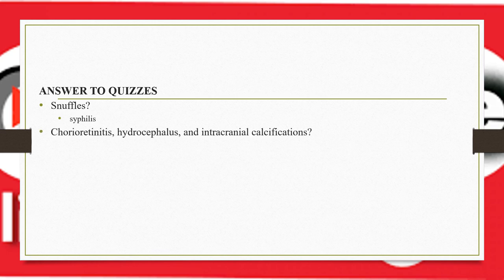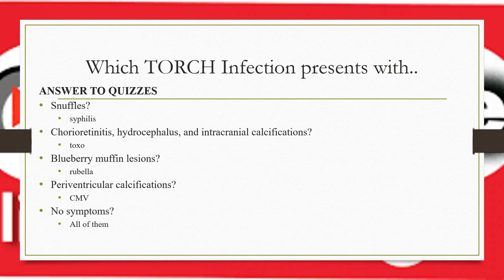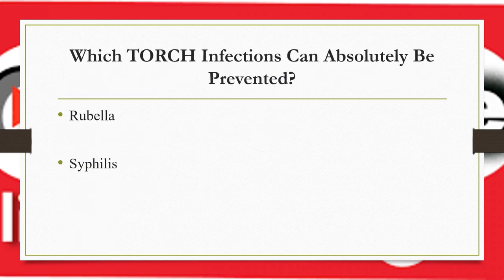To answer the initial quiz: snuffles is a sign of syphilis; chorioretinitis, hydrocephalus, and intracranial calcification is the classic triad of toxoplasmosis; blueberry muffin is a sign of rubella; and periventricular calcification is a sign of CMV. All TORCH infections can present with asymptomatic infants. Which TORCH infections can absolutely be prevented? Rubella and syphilis — rubella through vaccination, and syphilis through proper antenatal screening with VDRL and treatment during pregnancy, which prevents transmission in more than 98 percent of cases.